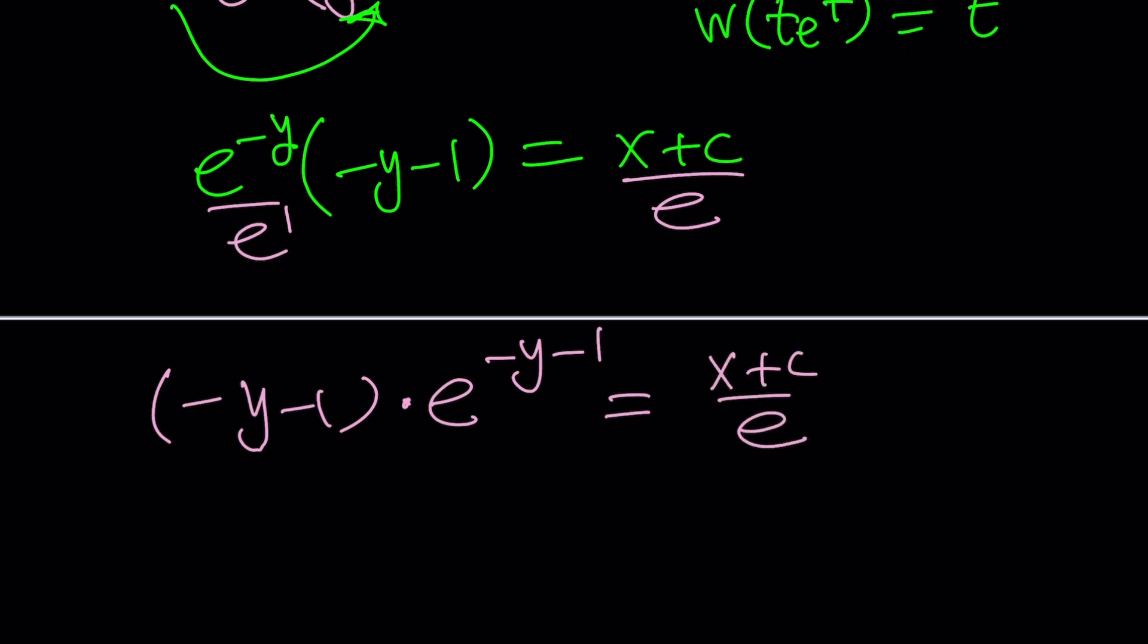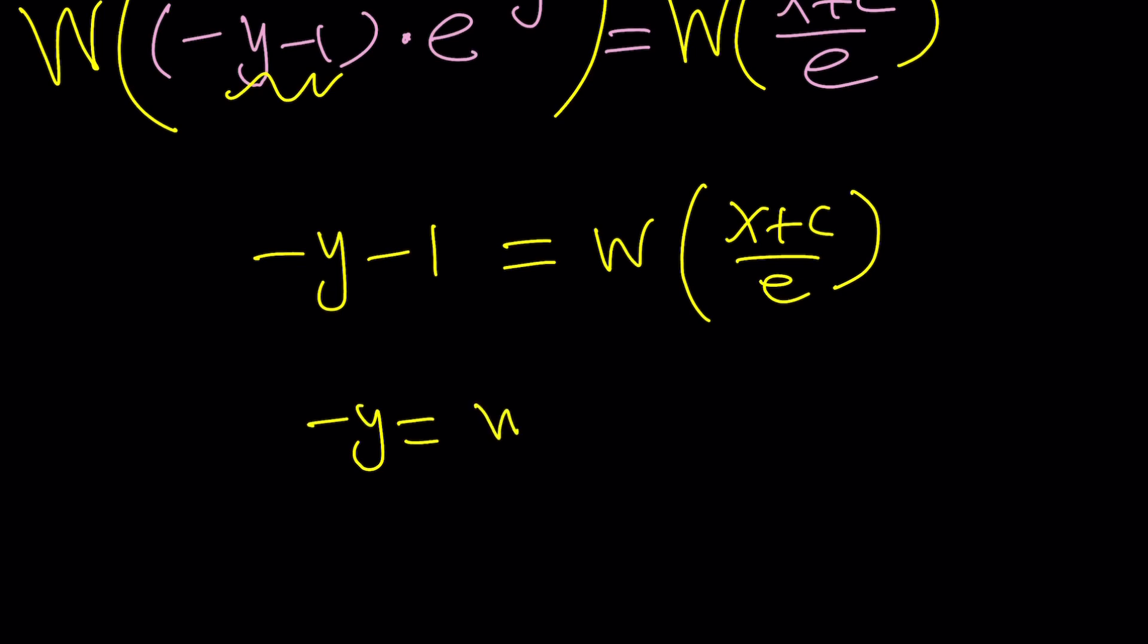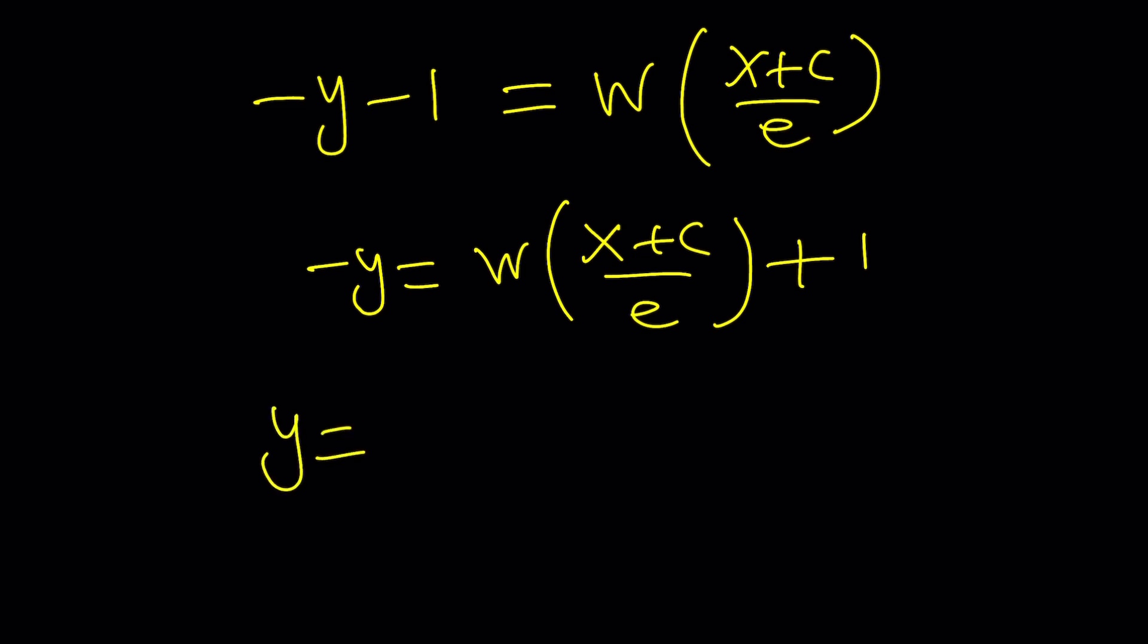Now, here's where we apply Lambert's W. Okay, let me leave some room here so I can fit the W nicely. So we're going to put a big giant W here and a big giant W here. And when you apply it here, this is your t times e to the t. So it's just going to be negative y minus 1. And this will be W of x plus c divided by e. Let's go ahead and add one to both sides. And then we're going to multiply both sides by negative 1. That's going to give you y equals negative W of x plus c over e minus 1. All right.